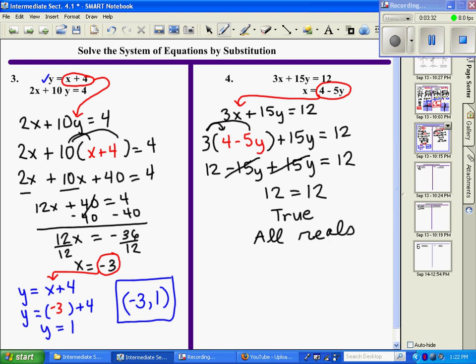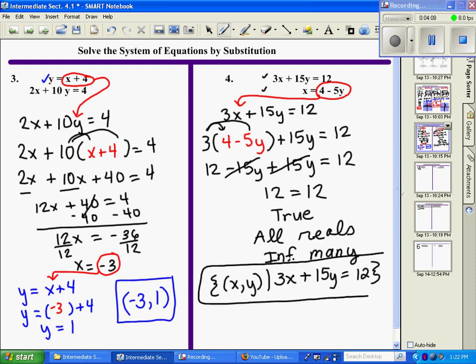All-reals, sometimes known as infinitely many, means this is our third case in which two lines are on top of each other and they have many, many points in common. Set builder notation for an all-real answer would be the ordered pair x, y, such that, and they'll usually take either one of the original equations. They'll either take this first one or the second one and put it to represent. So I'm just going to take the top one: 3x plus 15y equals 12. These all mean the same thing, and that's the set builder notation for the solution.